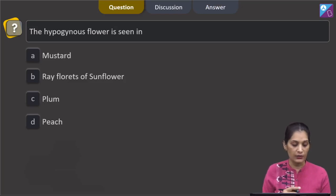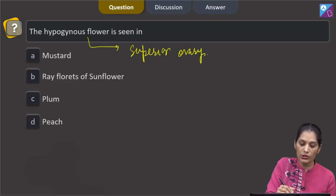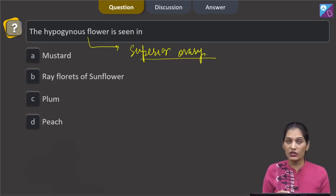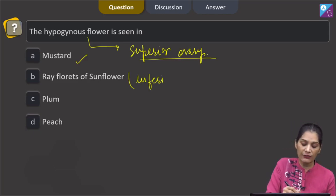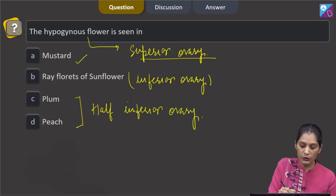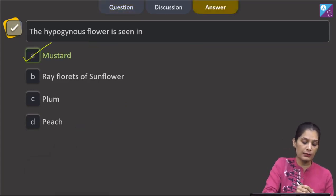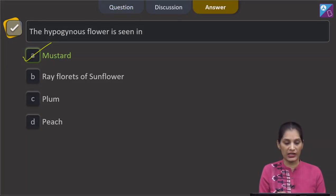Let's move to the next question. This question says the hypogynous flower is seen in - hypogynous flower means superior ovary. The ovary should be superior. Mustard has superior ovary. Ray florets of sunflower, they have inferior ovary. If we talk about plum and peach, both of them have half inferior ovary. So the correct option for the given question is option A which says mustard. Let's move to the next question.